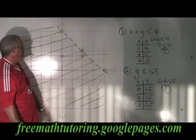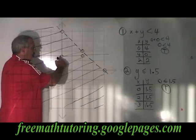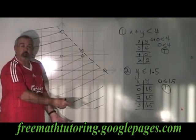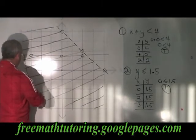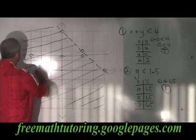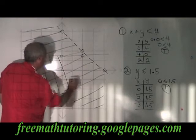So I shade from my line towards my test point. In this case, that means down. Choosing a direction for my shading that is different from the direction I chose for the first inequality, I draw shading all the way down from my line to the edge of the graph all the way across.